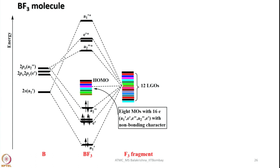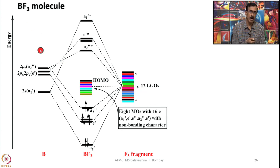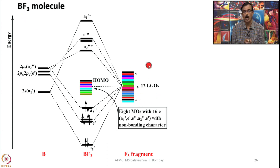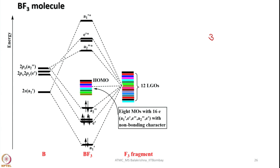Let us look into BF3. Boron has 3 valence electrons, and three fluorine atoms each bring 7 electrons, giving a total of 24 electrons. To construct the MO diagram I consider the 4 valence orbitals of boron (1s and 3p) and 4 orbitals from each fluorine atom, yielding 12 ligand group orbitals from fluorine. Different colors are used just to distinguish the 12 ligand group orbitals and make counting easier. The MO diagram must account for all 24 electrons.